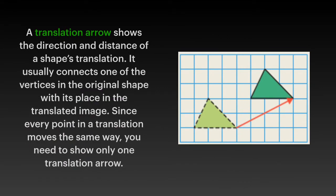A translation arrow shows the direction and distance of a shape's translation. It usually connects one of the vertices in the original shape with its place in the translated image. Since every point in a translation moves the same way, you need to show only one translation arrow.